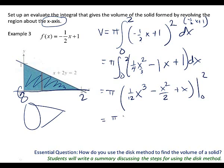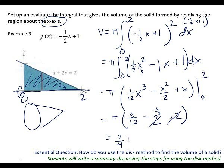Pi times the integral: one-fourth x squared integrates to x cubed over twelve. Negative one x integrates to negative x squared over two; that becomes negative two. One integrates to x — plug in two. Is zero going to matter? No. Two cubed is eight over twelve; two squared over two is two; and two gives two. Eight-twelfths reduces to two-thirds, so the answer is two-thirds pi.